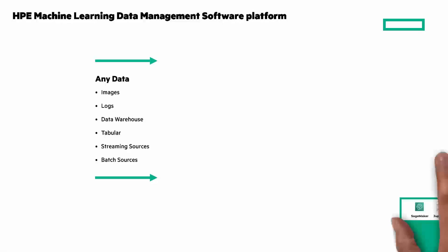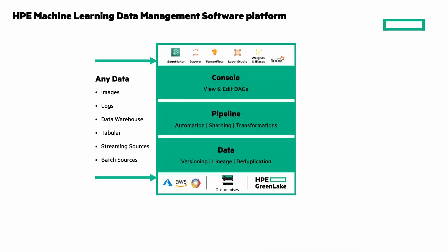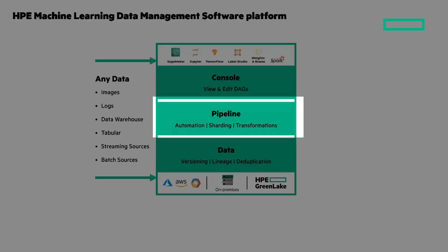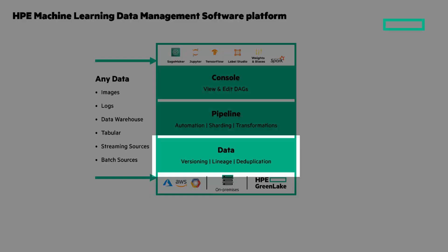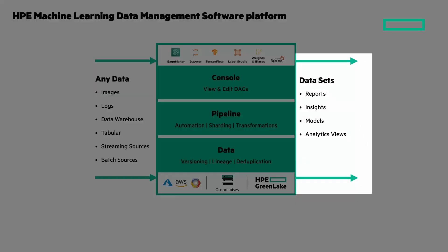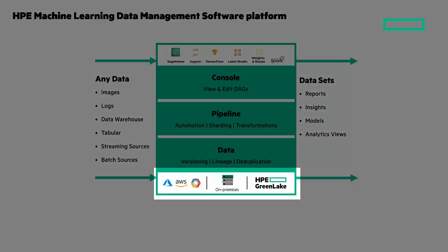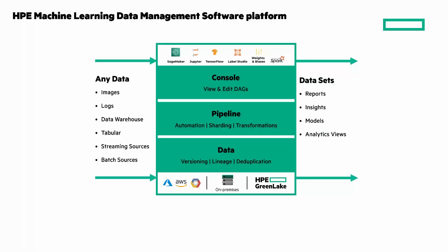The software platform is made up of our console, where you can view and edit directed acyclic graphs, or DAGs. Next is the pipeline, with automation, sharding, and transformations. And then the data, with versioning, lineage, and deduplication. And output — the data sets which include reports, insights, models, and analytic views. You can deploy it with major cloud providers, on-premises, or with HPE GreenLake.